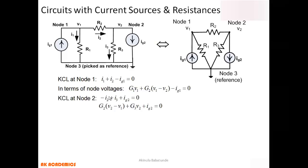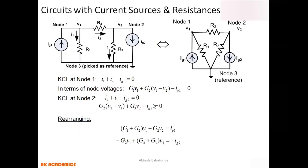Applying KCL at Node 2: the current i2 is entering Node 2, so it gets a negative sign. The currents ig2 and i3 are leaving Node 2, so they get positive signs. This gives: -i2 + i3 + ig2 = 0. Expressing in terms of node voltages, i2 = G2(V2 - V1), giving us: G2(V2 - V1) + G3·V2 + ig2 = 0.